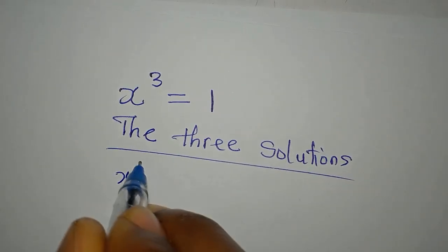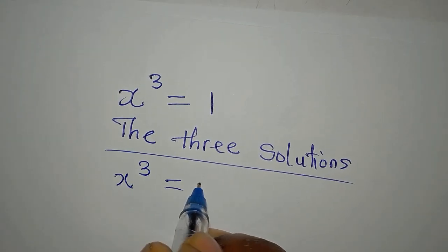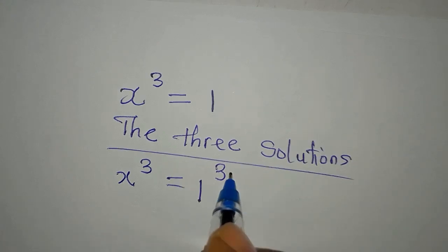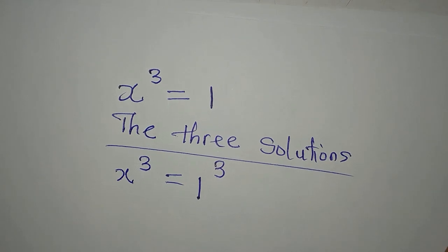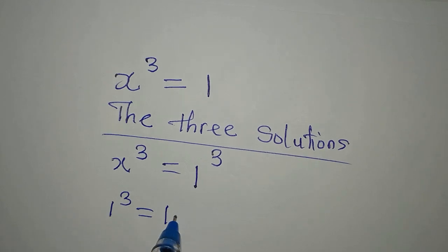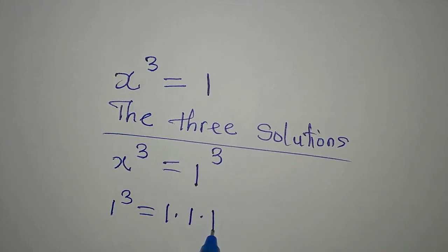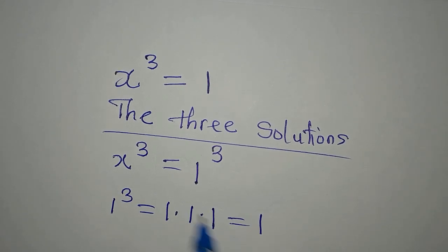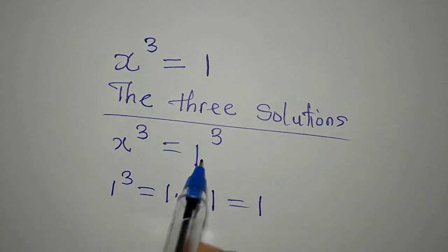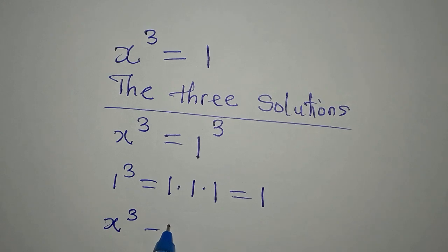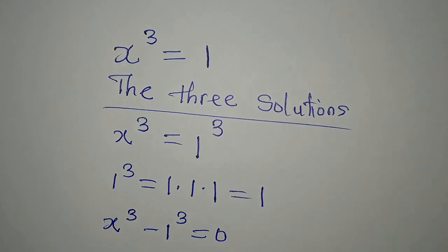First of all, we have x to the power of three equals one. But if I put power of three here, it does not change the thing, because one to the power of three is the same as one. Because one to the power of three is one times one times one — one times one is one, times the next one, and it's still one. So we have not changed anything. Now, bring this to the left, so we have x to the power of three minus one to the power of three equals zero.